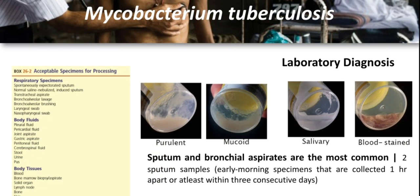Specimens received by the laboratory for mycobacterial smear and culture must be handled safely, as tuberculosis ranks high among laboratory-acquired infections. For diagnostic purposes, all persons suspected of having TB disease should have sputum collected for TB culture — at least two consecutive sputum specimens collected at one-hour intervals, with at least one being an early morning specimen. If sputum is not available, other acceptable specimens include respiratory specimens, body fluids, and body tissues.